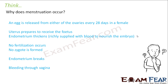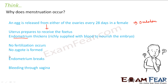Why does menstruation occur? An egg is released from either of the ovaries every 28 days in a female — this release is called ovulation. As soon as ovulation takes place, the uterus prepares itself to receive the fetus. The inner wall of the uterus, known as the endometrium, thickens. It gets richly supplied with blood to nourish the embryo. Then it waits for around 14 days.